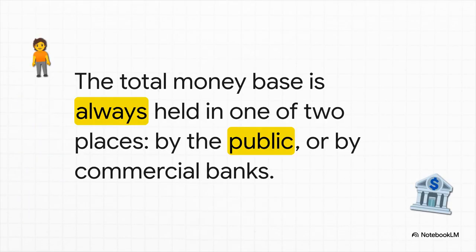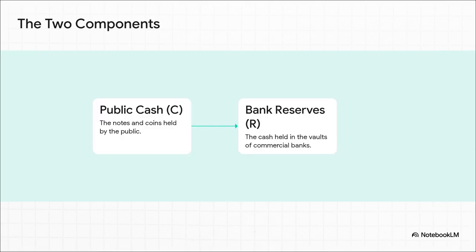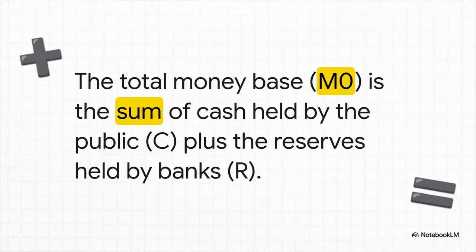At any given moment, all of this physical cash can only be in one of two places. It doesn't just disappear. It's either in our hands — the public's — or it's sitting inside a commercial bank. Economists use simple letters for this: we call the cash in our wallets C, for cash held by the public, and the cash sitting in bank vaults R, for reserves. Which means the formula for the money base is incredibly simple: M0 = C + R. It's a closed loop.